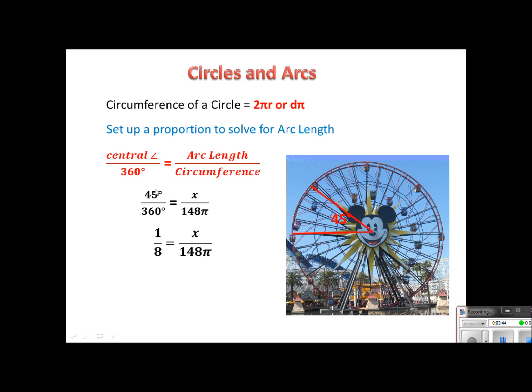I'm going to simplify the 45 over 360. I'm always recommending simplifying because you're just going to have smaller numbers. So this reduces to 1 over 8. Now I can cross multiply. It would just be 8x equals 148π, and then of course divide both sides by 8.